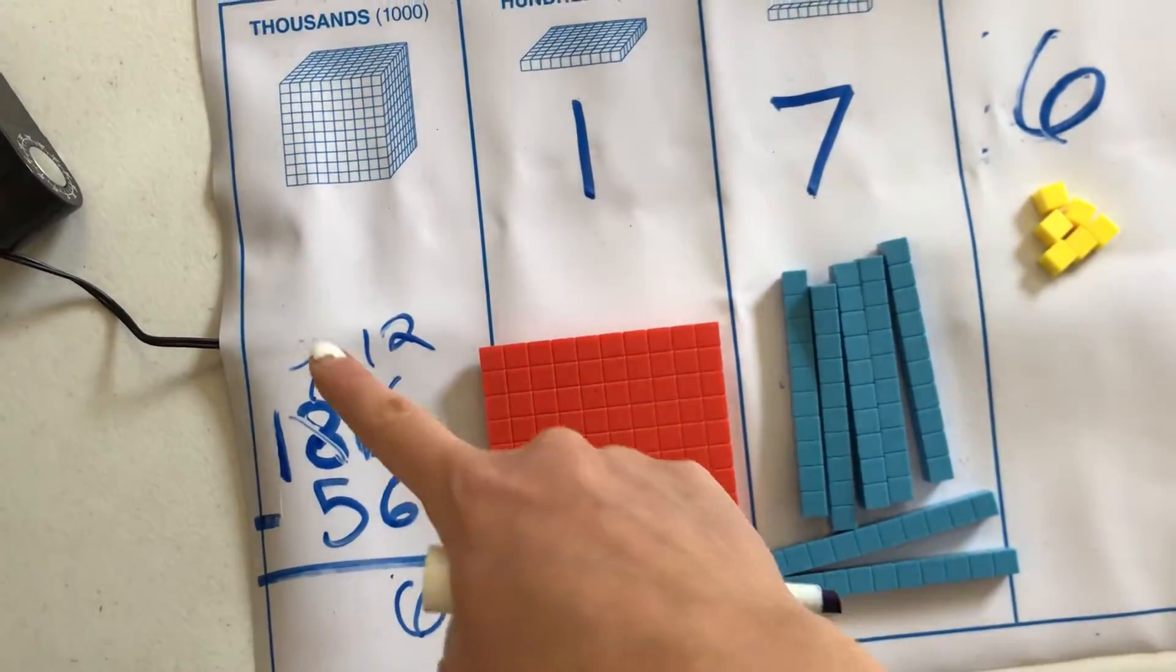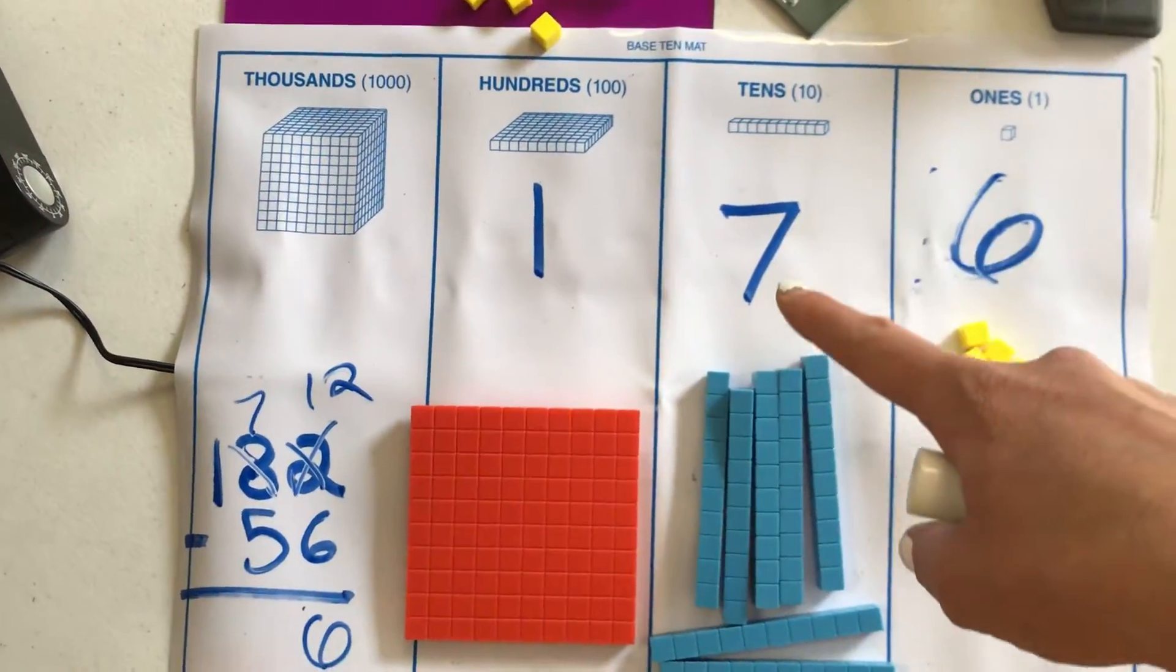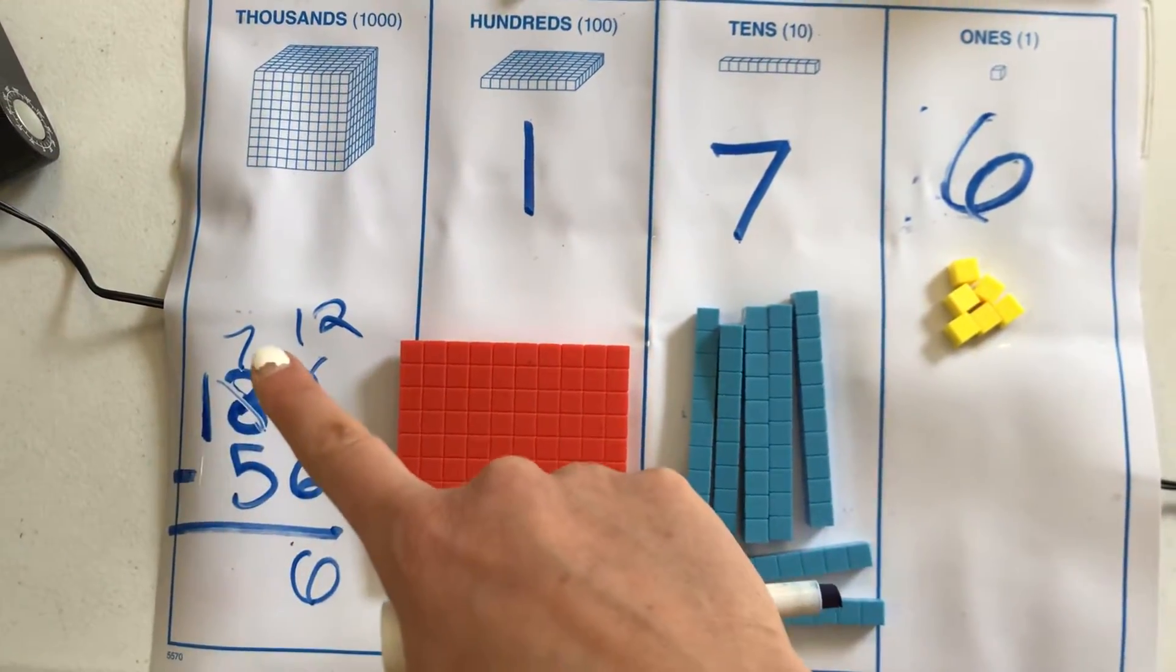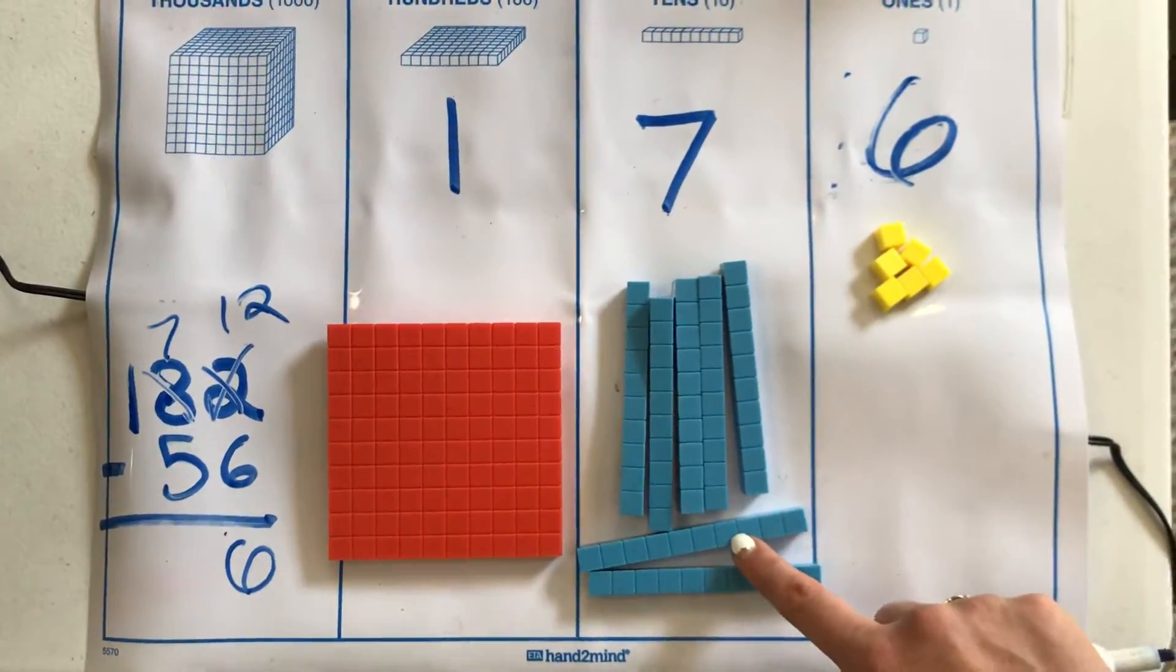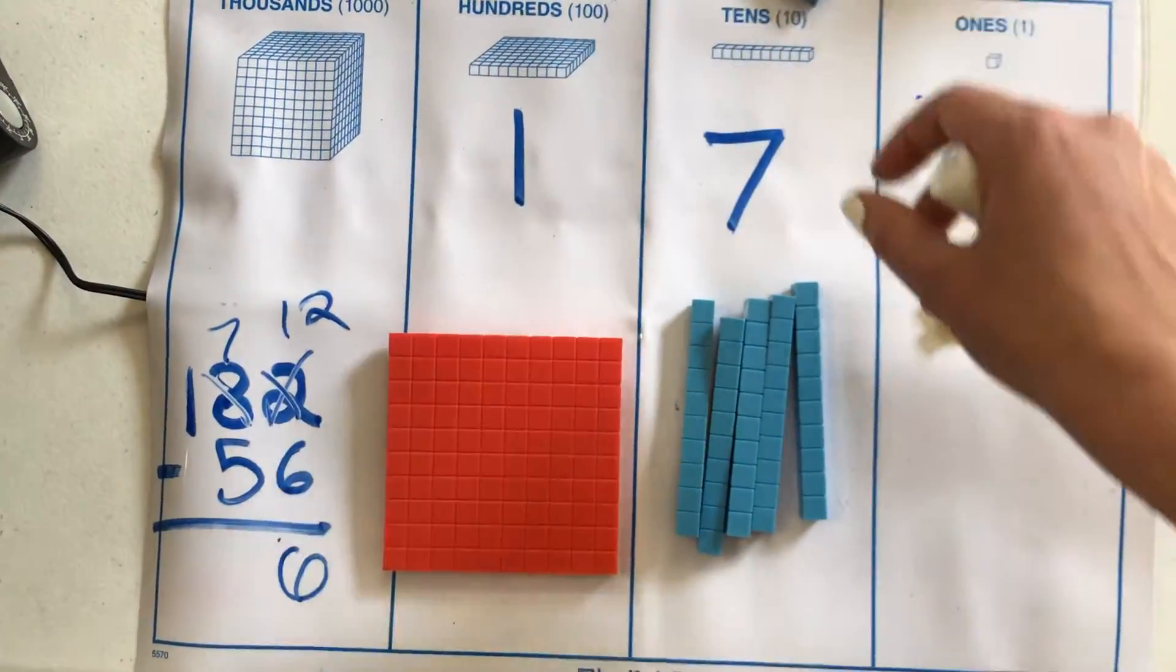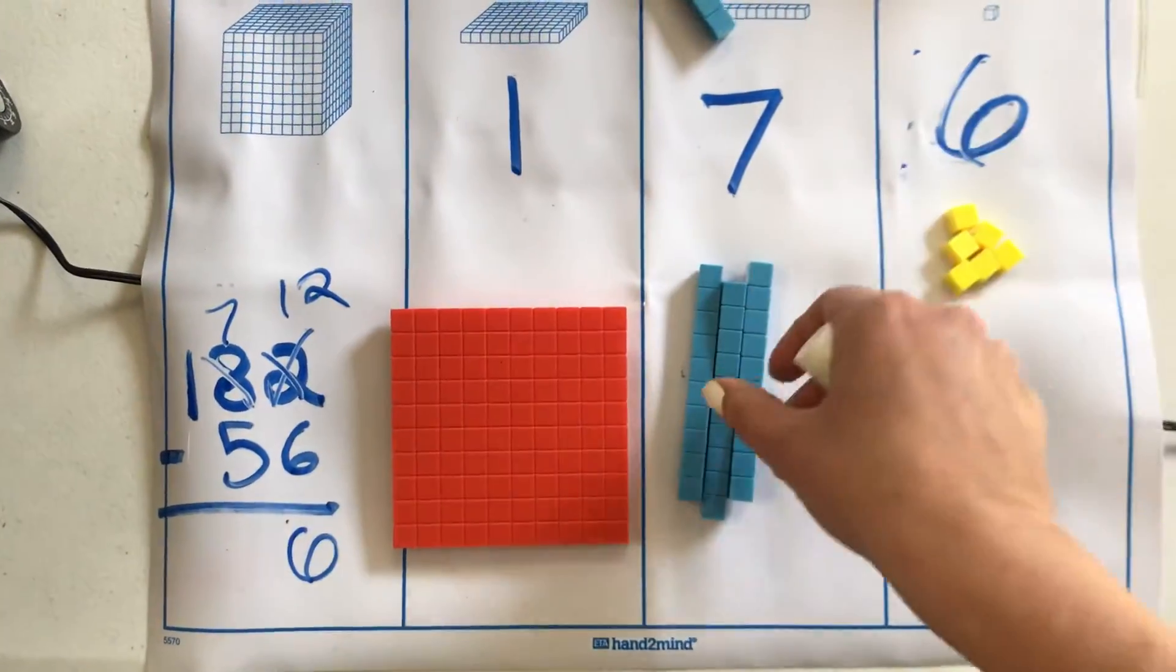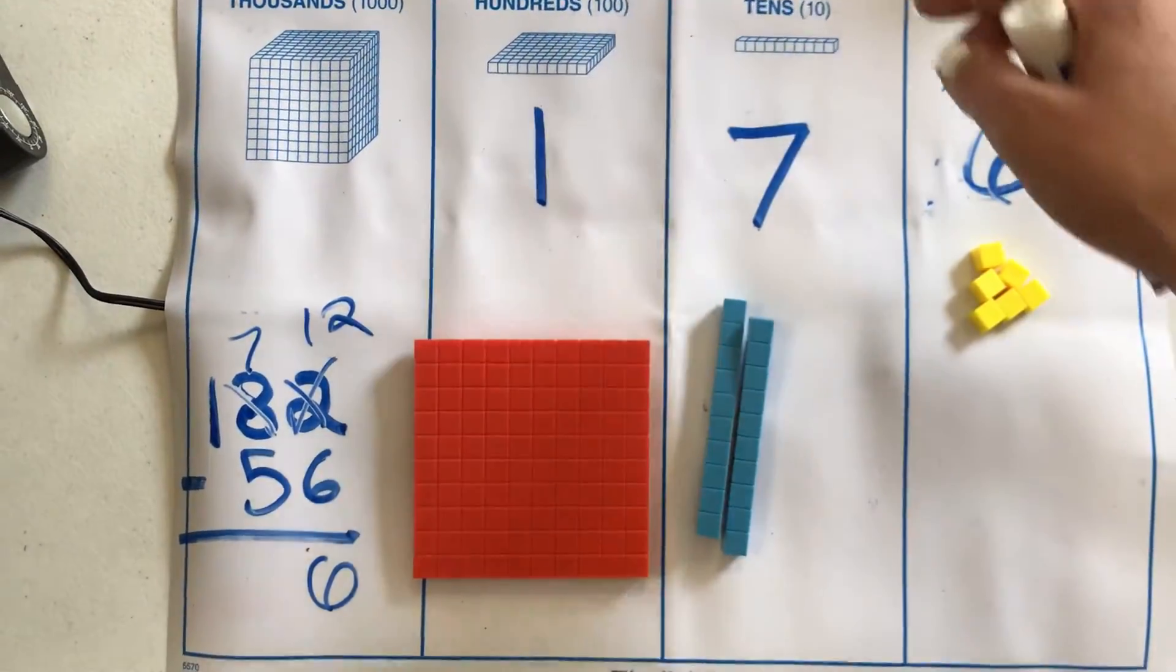So I'm done with that column. Let's go to the tens column. So I have seven. And how much am I taking away? Five. I have enough that I can take away five. One, two, three, four, five. Get those out of here.